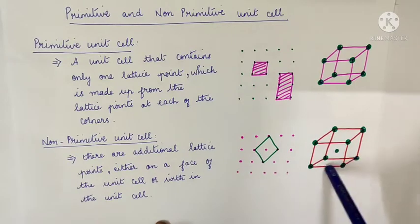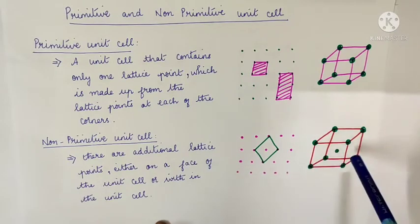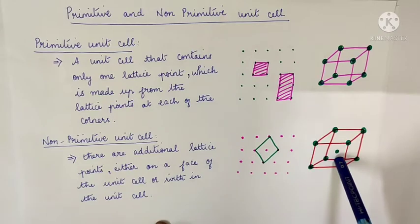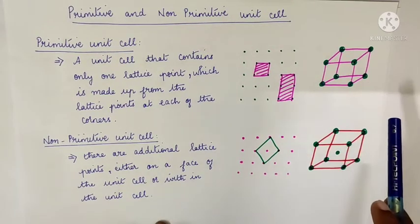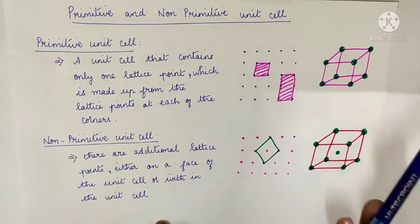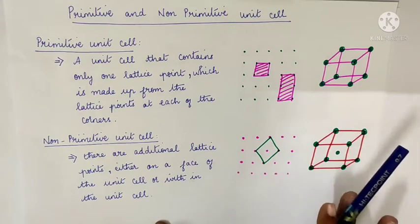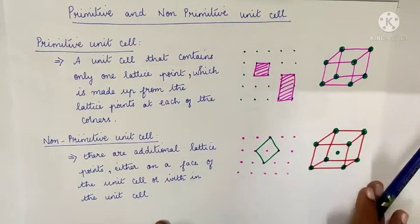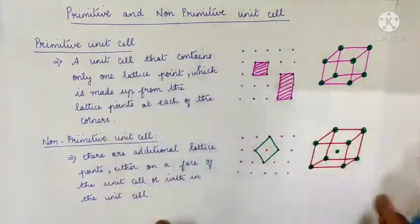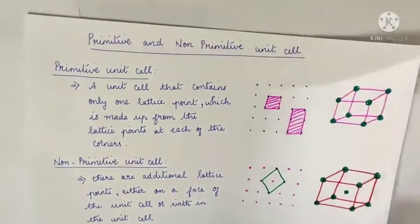A simple unit cell has one lattice point. A body-centered unit cell is a non-primitive unit cell. Primitive cells are of seven types.